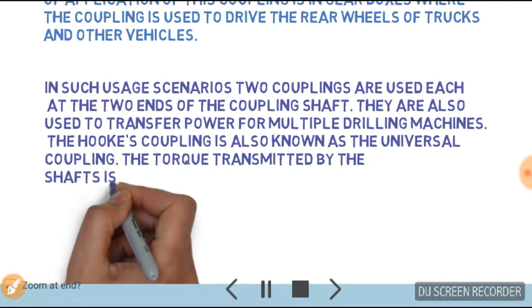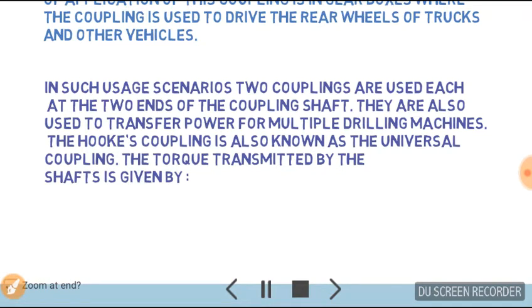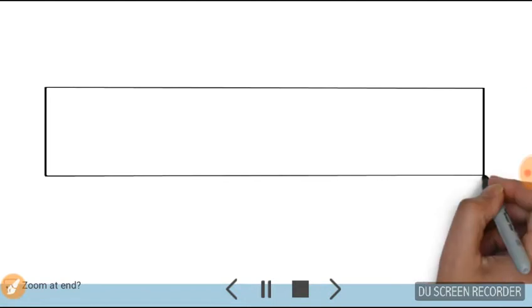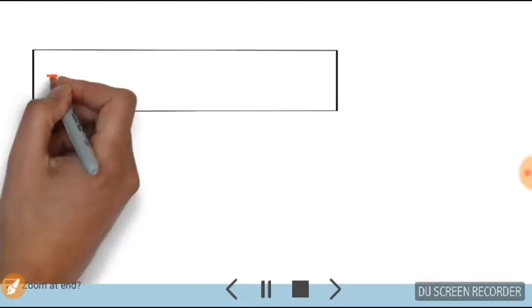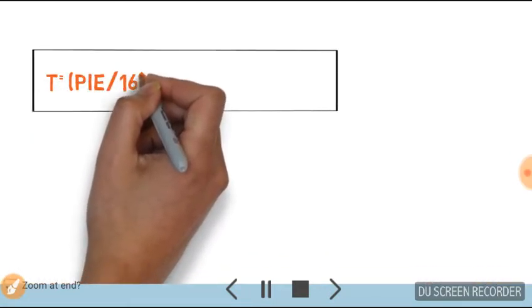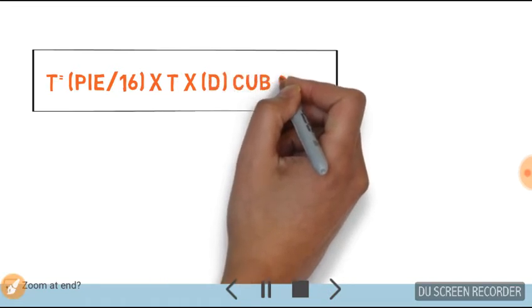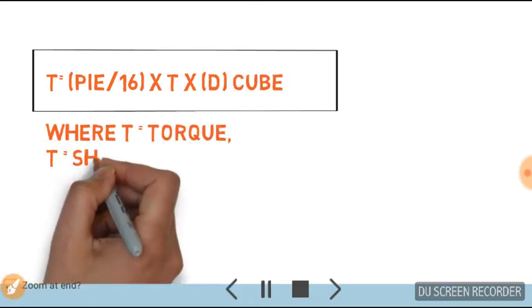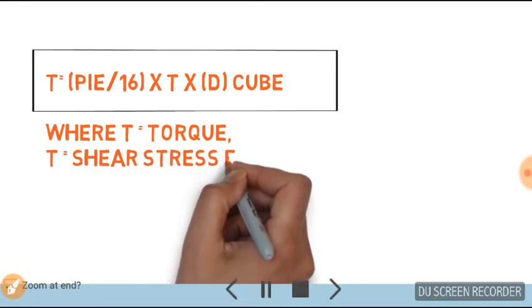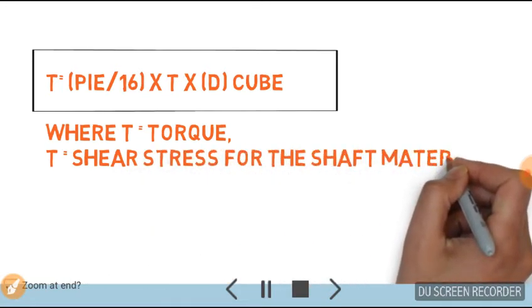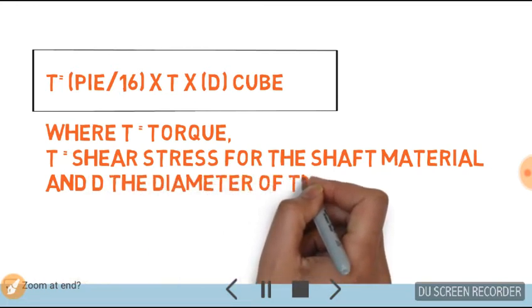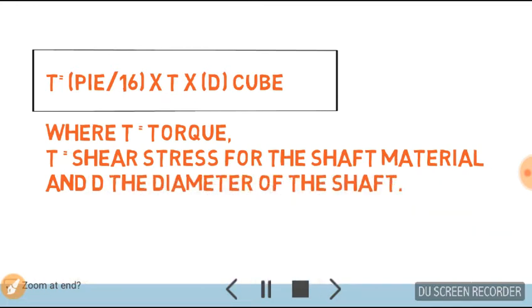The torque transmitted by the shaft is given by T = (π/16) × τ × D³, where T is torque, τ is shear stress for the shaft material, and D is the diameter of the shaft.